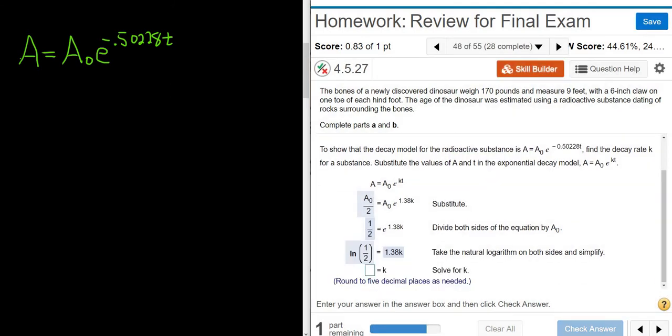And then it says solve for K. So I'm going to write this down. So to solve for K, we have ln 1 half equals 1.38 K. So we just have to divide by 1.38. So divide by 1.38. So K is equal to approximately, it looks like it wants 5 decimals. I'll type this into my calculator. So ln 1 half divided by 1.38.